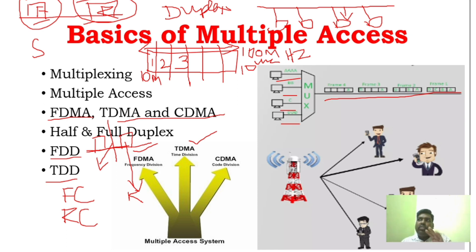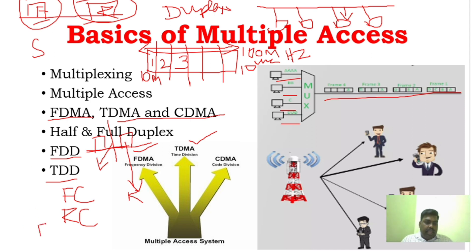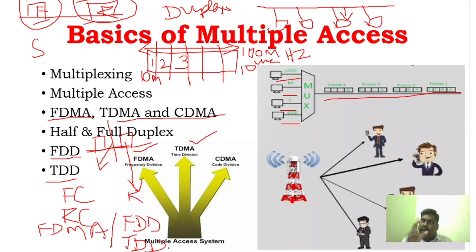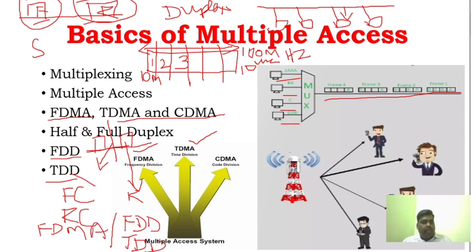A very important concept: FDD is not the same as FDMA. FDMA is a channel access technique — Frequency Division Multiple Access — used by multiple users to share a channel. FDD is a duplexing method — Frequency Division Duplexing — which defines how forward and reverse channels are separated. An FDMA system can use either FDD or TDD as its duplexing scheme.